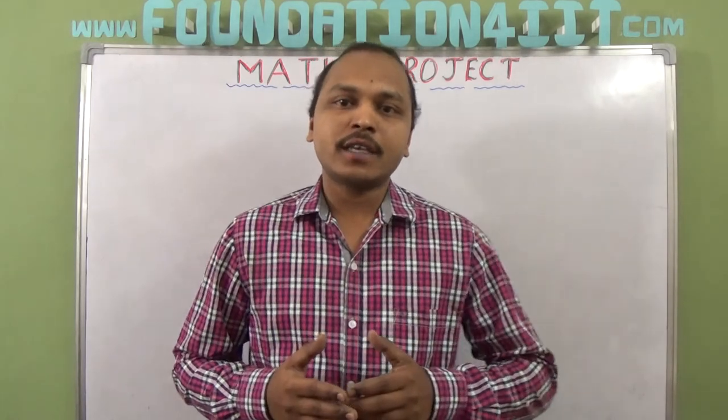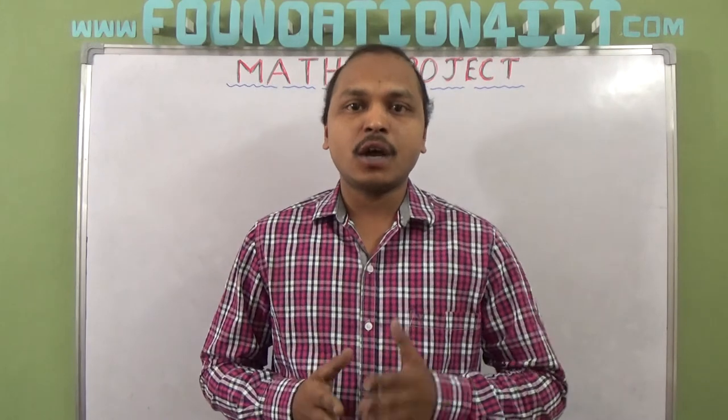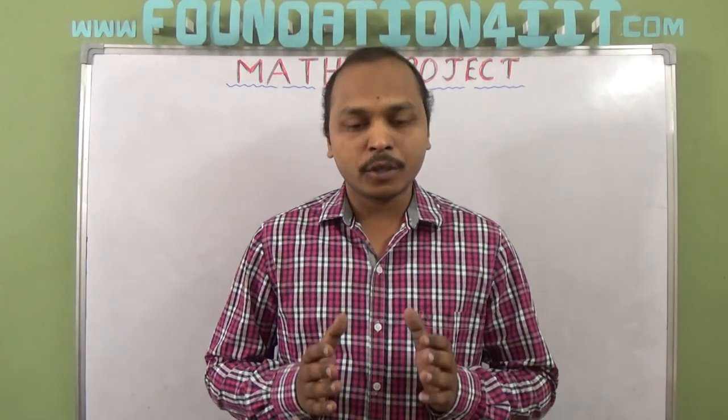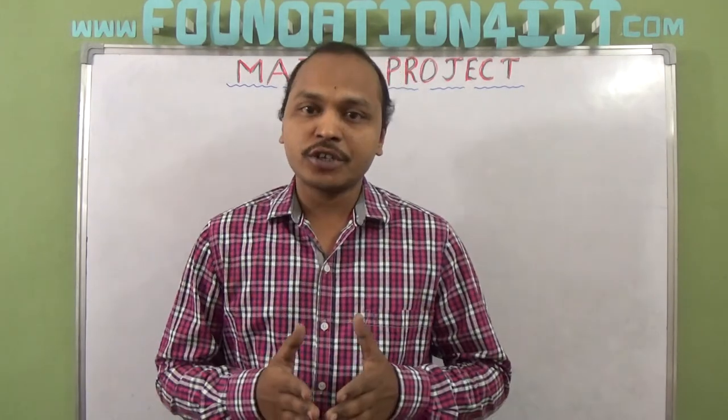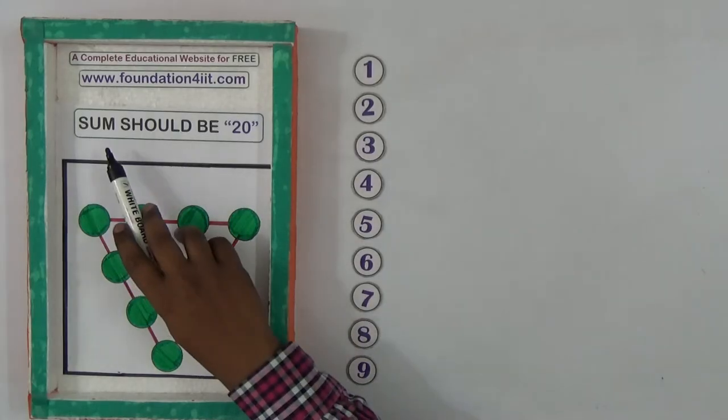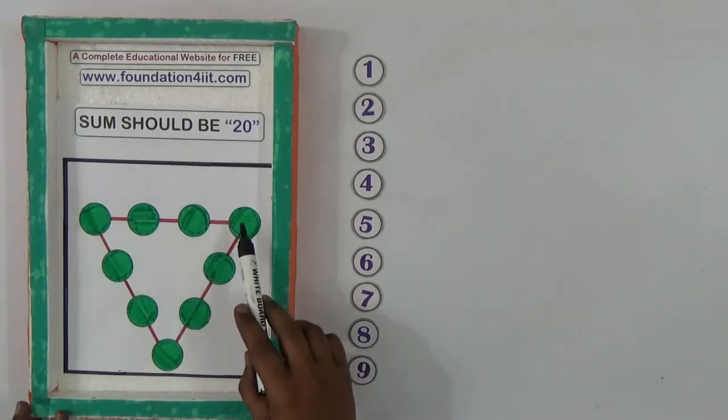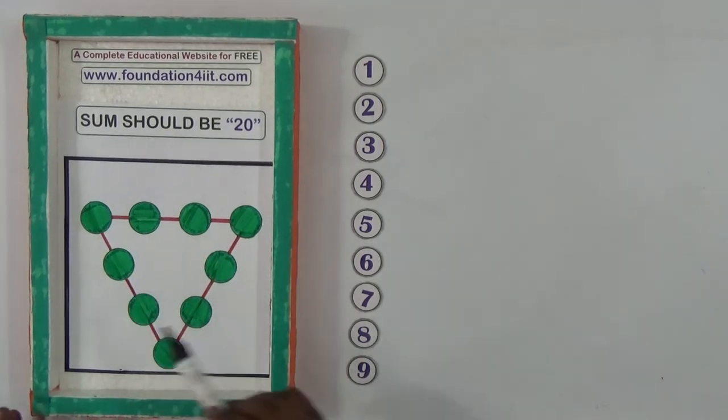To improve their skills and reasoning abilities, I'll explain the project and its solution. In this number game, the sum should be 20. If you observe here, there are one through nine, total nine circles.